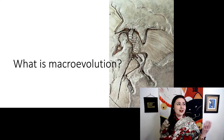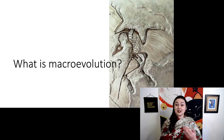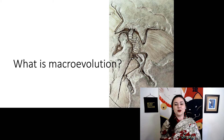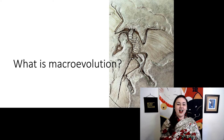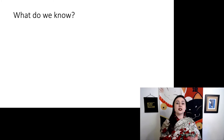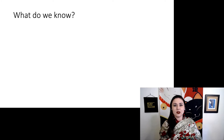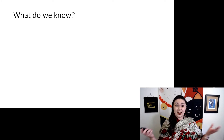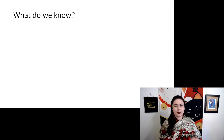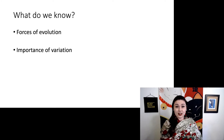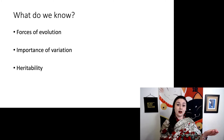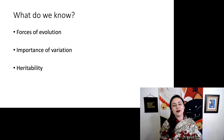But first, what even is macroevolution? This is another one of my favorite fossils — Archaeopteryx. This is one of the important fossils that helped us discover that birds are descended from dinosaurs and that some dinosaurs had feathers. Let's think about what we know, because this will help us organize the different concepts we've been learning and relate them to each other. We've talked about the forces of evolution, the importance of variation, and heritability — how traits are passed from parent to offspring, and how we can see that common thread of descent with modification.